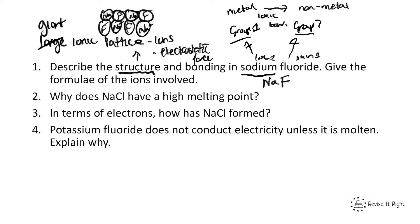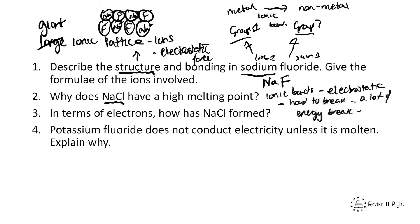Why does NaCl have a high melting point? Anything has a high melting point because it has strong bonds. Sodium is in group 1 and chlorine is in group 7, so they form an ionic bond via an electrostatic force. That electrostatic force is hard to break — it requires a lot of energy, and therefore a lot of heat energy. That is why NaCl has a high melting point: the ionic bonds held together by electrostatic forces require a lot of energy to break.